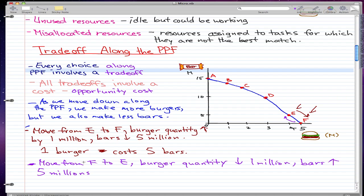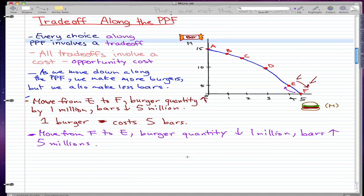So bars increased 5 million and burgers went down 1 million. That's right, so the opportunity cost of 5 million bars is 1 million burgers. Pretty much 1 bar costs 1 fifth of a burger.